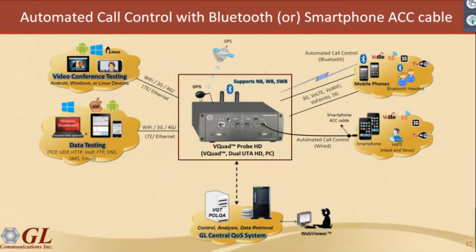We also have a GPS. We use it for two different things: first for lat-long coordinates — everything gets stamped with coordinates so you can later map all your results on Google Maps, color-coded for pass/fail. The other use of GPS is for timing, which I'll show later, where we use it for one-way delay measurements between two different sites. We need a time reference and we use the GPS for that.